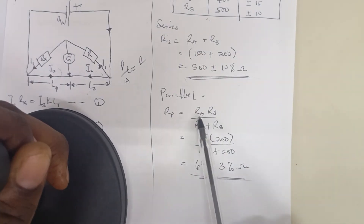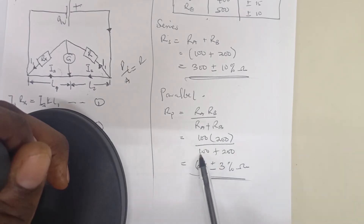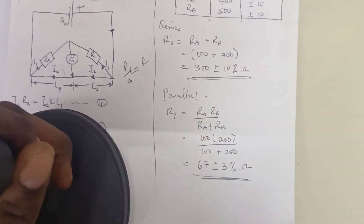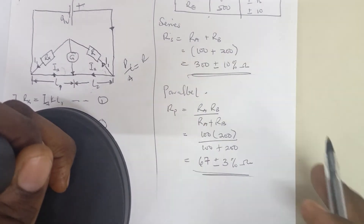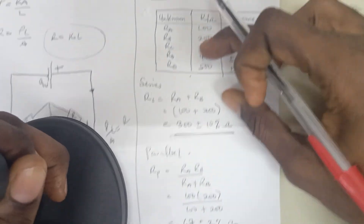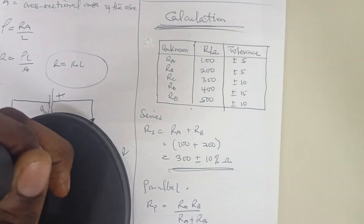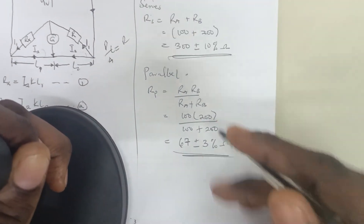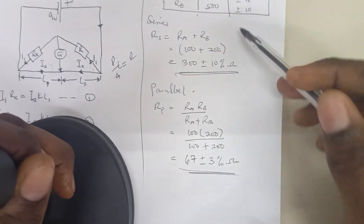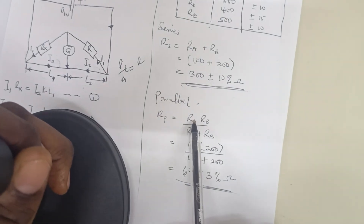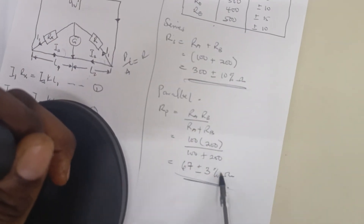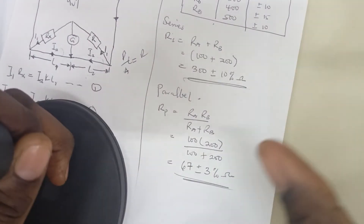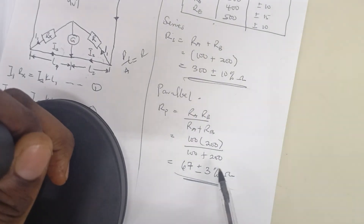Then for the resistors in parallel, we quote this formula straight: the product over the summation. You get 66-point-something. Resistance values should be whole numbers, so you round it to 67. That's for my example values — the values you measured in the lab might be different, so you use those. For the tolerance: 5 times 5 over 5 plus 5 should give you 2.5%. You can round it to 3%.